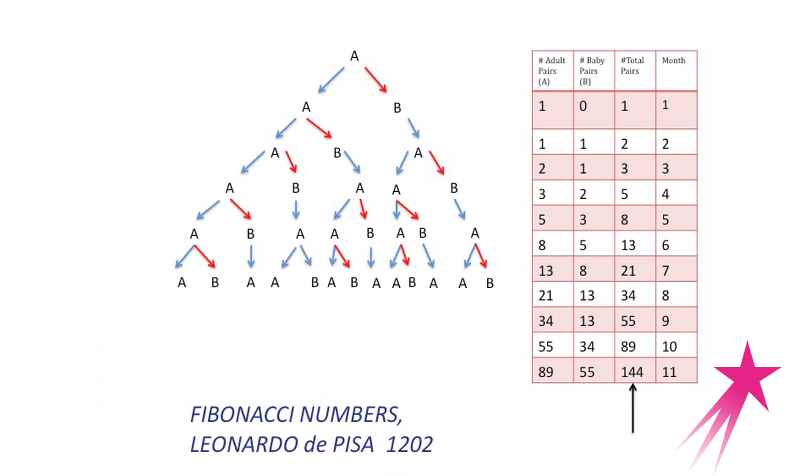So 13 was equal to 5 and 8. And if you look in the next month, 21 is equal to 13 plus 8. 34 is 21 plus 13. There's a pattern. The number of rabbits in any given month is the sum of the total number of rabbits in the previous two months. That pattern defines what are known as the Fibonacci numbers.